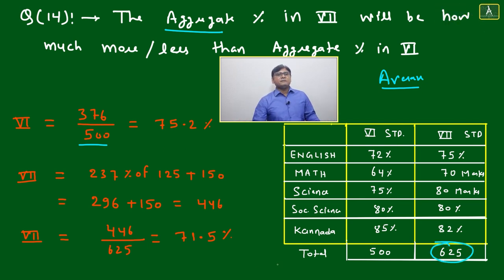In seventh, the total will be 625. For sixth standard, we add: 72 plus 64 plus 75 plus 80 plus 85 equals 376 out of 500. This gives us 75.2 percent as the aggregate percentage of sixth standard.